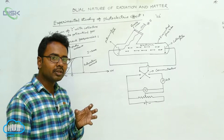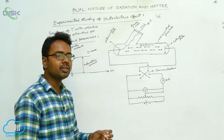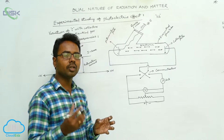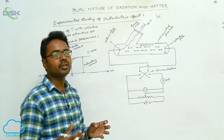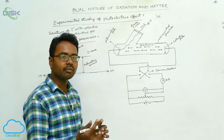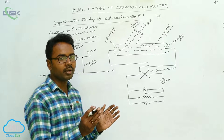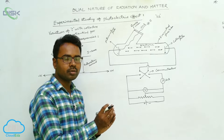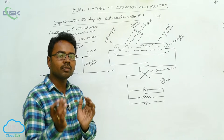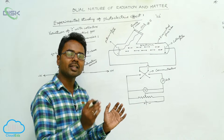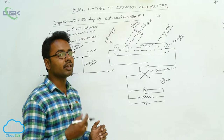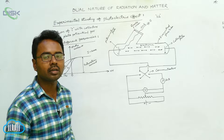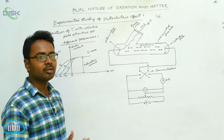As we increase the frequency, the energy of the photon will be increased. Since the work function is constant, the remaining energy is given to the electrons as kinetic energy, which will be increased. This means as we increase the frequency, the maximum kinetic energy of the electrons will be increased.